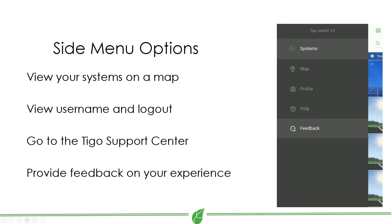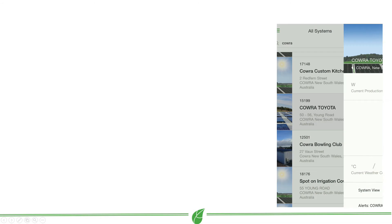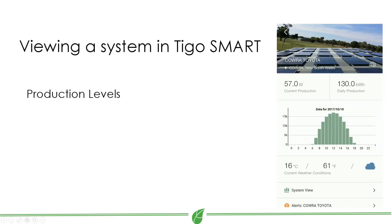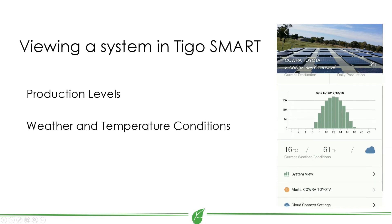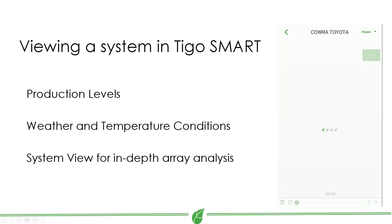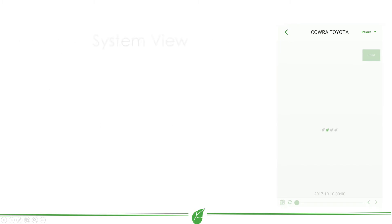You can also provide us with feedback to let us know how we can continue improving. Once you have selected a system to view, you can access information about it, including production levels and system weather conditions. System view allows you to view your array in real time.